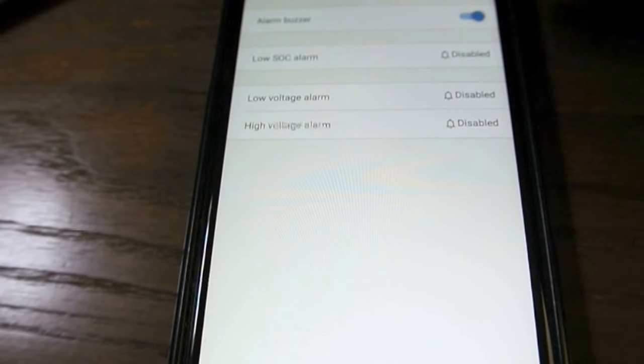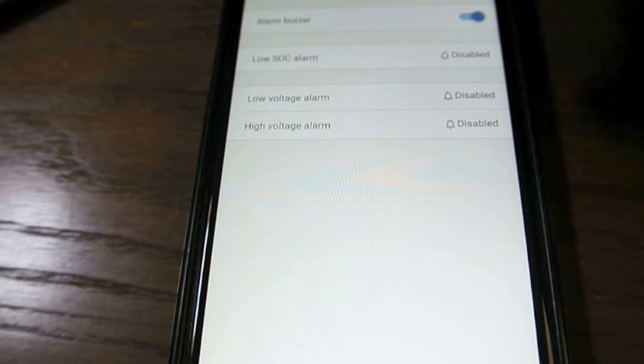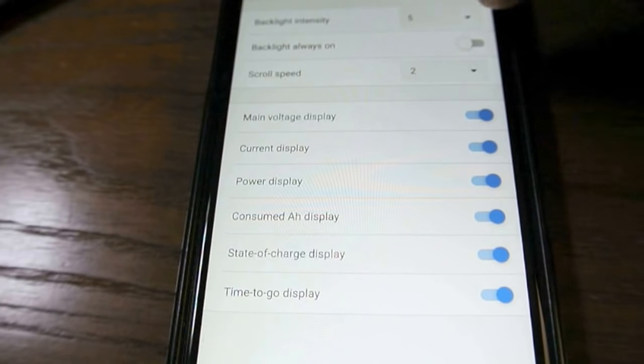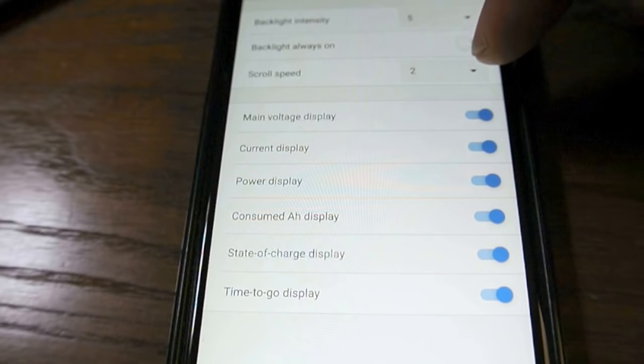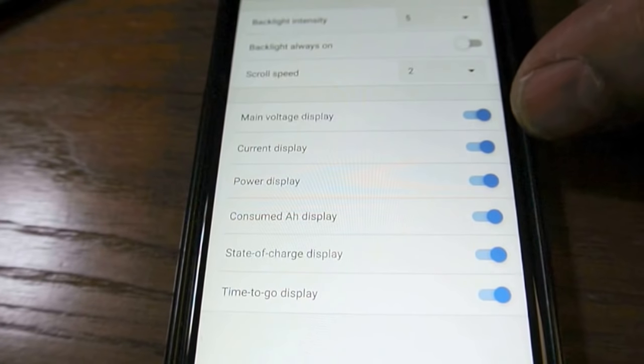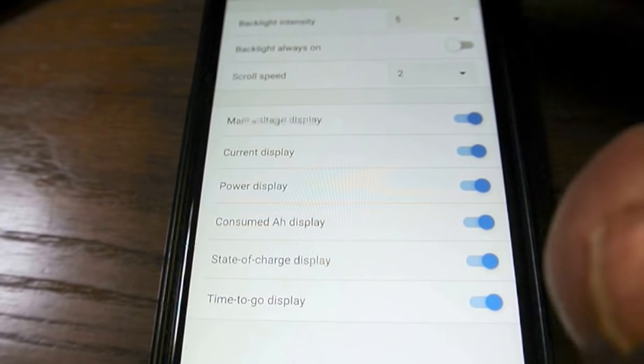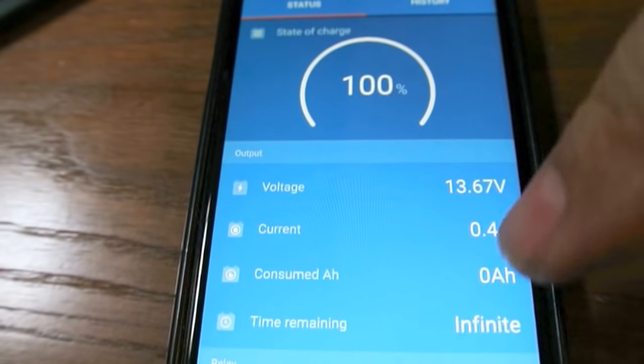And then the alarms, we've got low state of charge alarm, buzzer's on, low voltage and high voltage alarms are off. Display, we've got backlight intensity, backlight always on, scroll speed, main voltage display, current display, power display, consumed amp power display, state of charge display, and time to go display. So yeah, I'm very impressed with this.